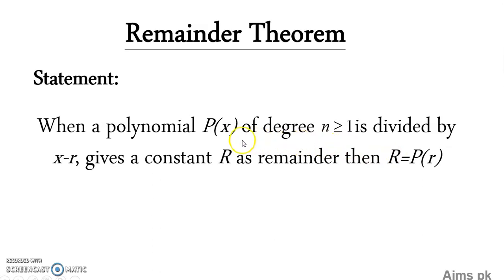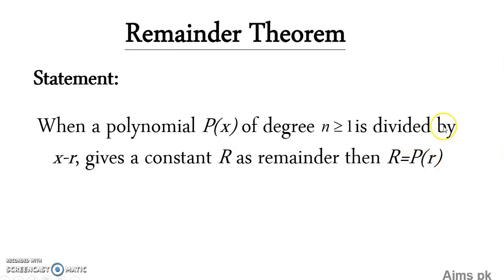What does this statement say? The Remainder Theorem states that when a polynomial P(x) is divided by a linear polynomial (x minus r), the remainder of that division will be equivalent to P(r). In other words, if you want to evaluate the function P(x) for a given number r, you can divide that function by (x minus r) and your remainder will be equal to P(r). It should be noted that the Remainder Theorem only works when a function is divided by a linear polynomial of the form (x plus number) or (x minus number).